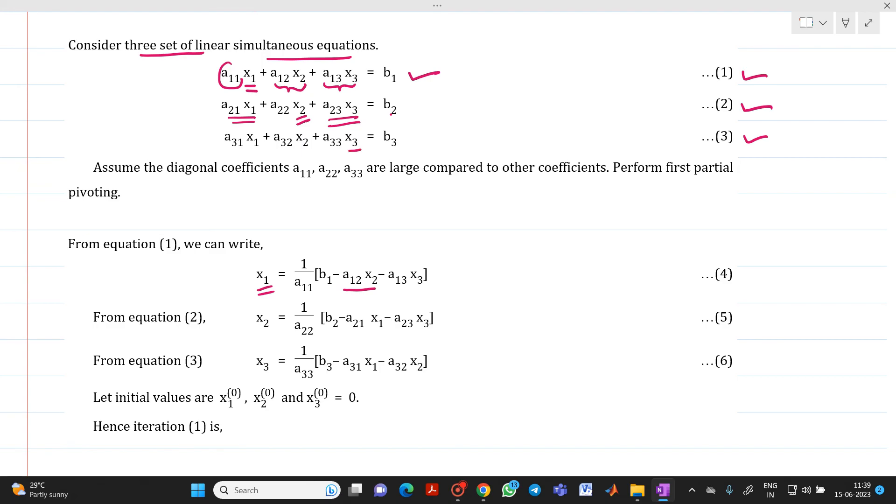From equation 3, we will write the equation for x3 as 1 upon a33 into bracket b3 minus a31x1 minus a32x2.